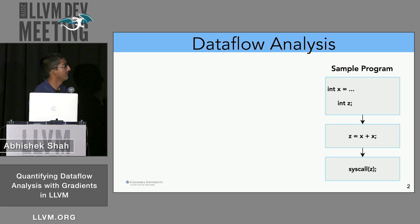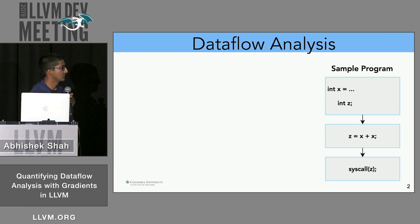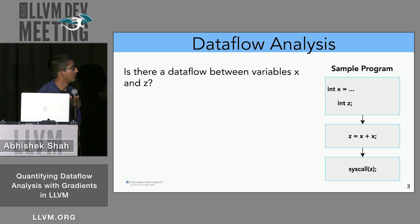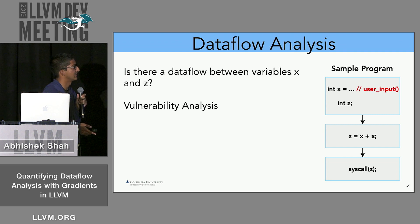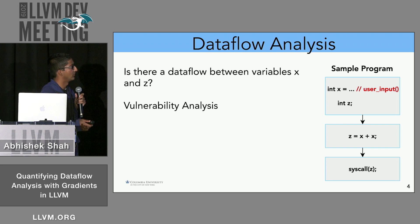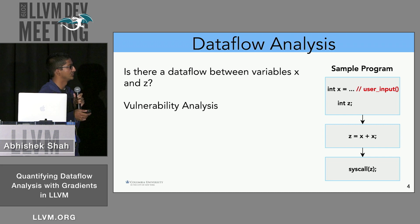We'll begin with a toy program. Imagine we have a program that declares two variables, sets z equal to the result of x plus x, and then feeds z to a system call. What data flow analysis seeks to do is detect if there is a variable that affects another variable — in this case, variable x affects variable z. If x is set to some user input, you want to know if there's a data flow between them.